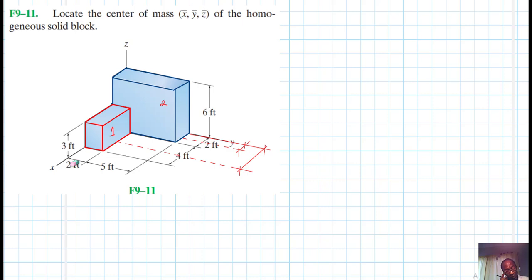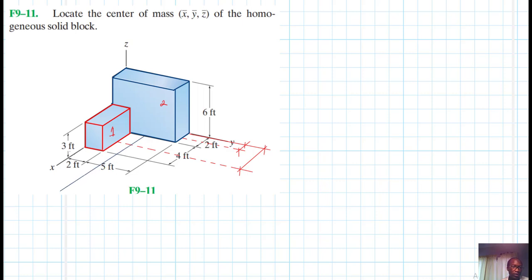Along the Y direction, I will have the centroid marked here. This is the midpoint along Y for each block. Let me mark that midpoint there along Y, and then the corresponding one for the second block.